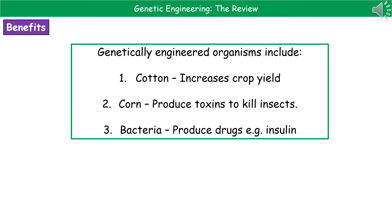Some key benefits of carrying out this process of genetic engineering: we can increase the crop yield, which is what we see with things like cotton. We can actually use toxins to kill insects that are produced by the plant itself, which is an example of what we can see in certain corn varieties.